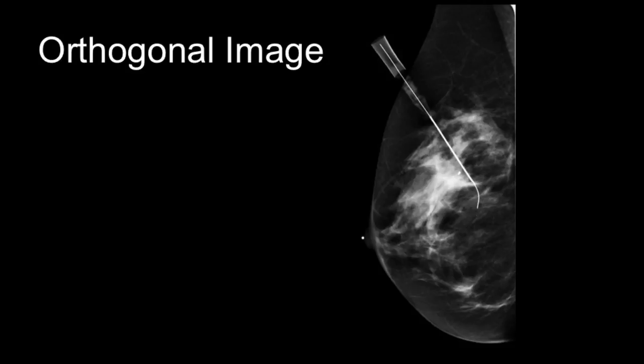The orthogonal view image should demonstrate the needle wire apparatus at least one centimeter beyond the target. If the needle is appropriately positioned, the wire can be locked in place. If the needle is too distal to the target, measure the distance and retract so the needle tip is only one centimeter distal. If the needle does not reach the target or is pulled back proximal to the target, remove the needle and re-perform localization. Do not advance the needle in the orthogonal view, as the relationship of the target to the needle is not verified in that plane.